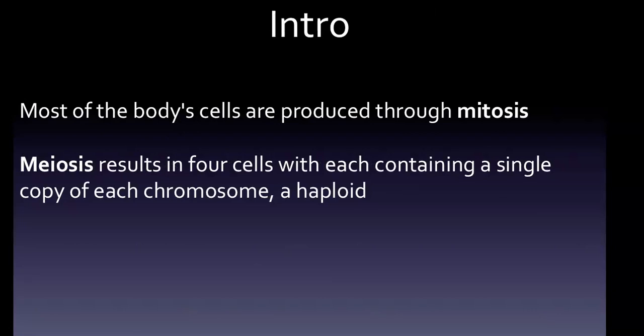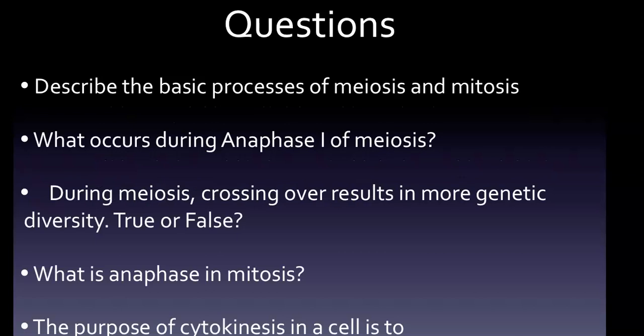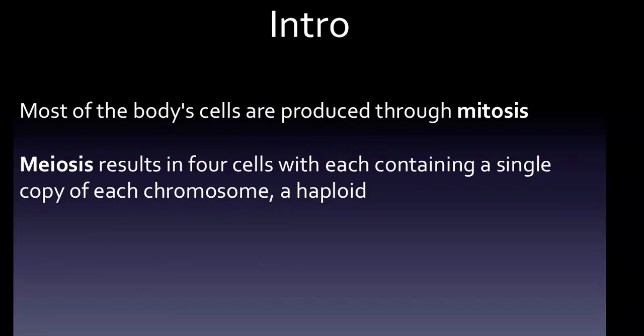When genetic material is exchanged between homologous chromosomes — which is crossing over — during meiosis, the result is more genetic combinations, which results in genetic diversity. We did have a crossing over question: during meiosis, crossing over results in more genetic diversity — true or false? The answer is true, because crossing over leads to more genetic combinations and therefore more genetic diversity.